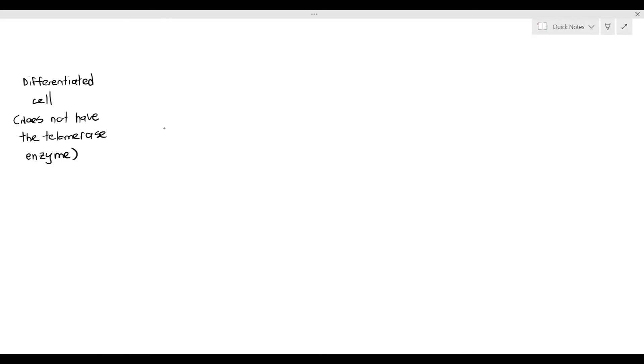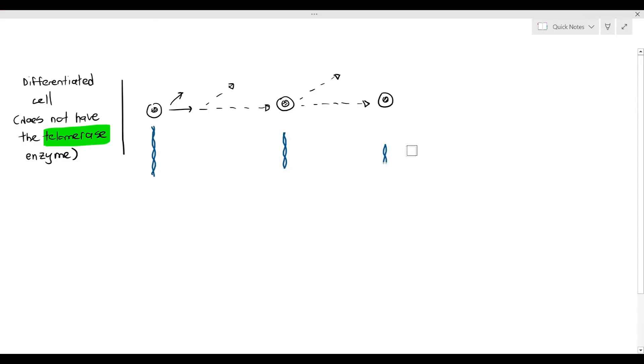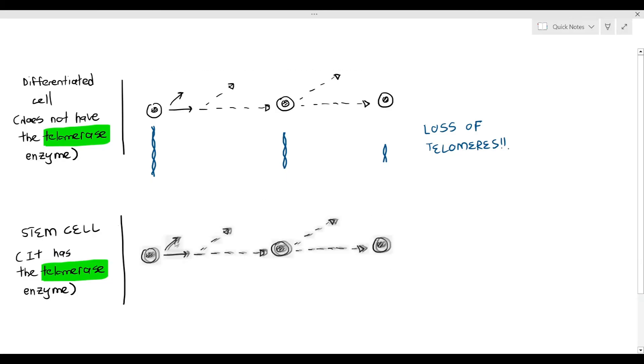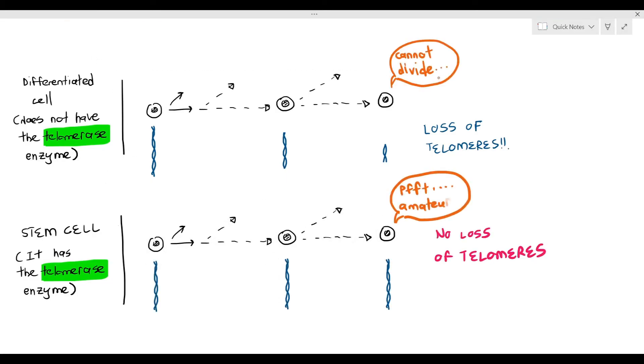That is how stem cells can continue to divide without actually losing any telomeres. So, in differentiated cells, they do not have the telomerase enzymes to rebuild the telomeres. So, as they continue to divide, loss of telomeres progressively happens. But in stem cells, they have the telomerase enzyme, and because they have the telomerase enzyme, there's no loss of telomeres that happens, even though the cells continue to divide many times. That's the interesting thing we want to actually look at with stem cells.